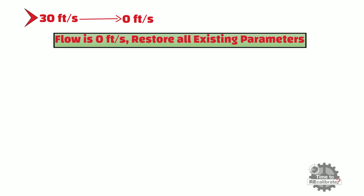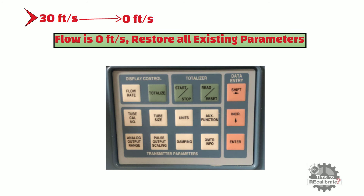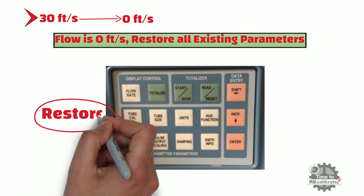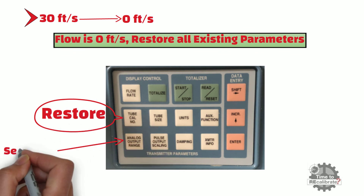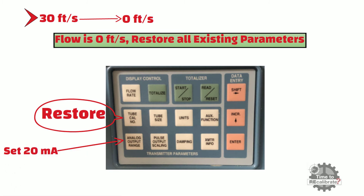Step 9: Move the knob to 0 feet per second and wait until the display shows 0 feet per second flow. Then configure all existing parameters of the flowmeter — in other words, restore the original parameters. First, restore the flow tube calibration number. Secondly, set the 20mA analog output range back to its original value. For example, if the 20mA range was 1.11 liters per second before verification, set 1.11 liters per second as the analog output range. Also change the unit of flow and the coil pulse mode frequency back to their original values.